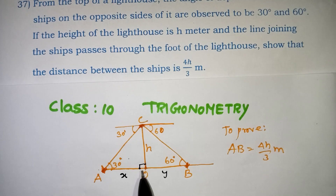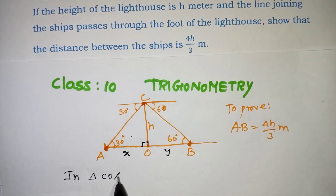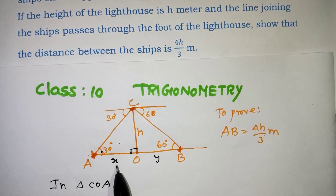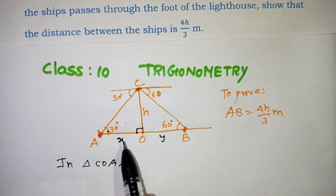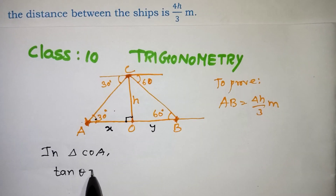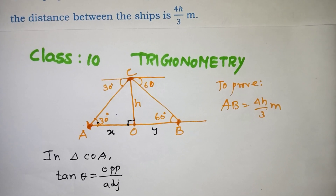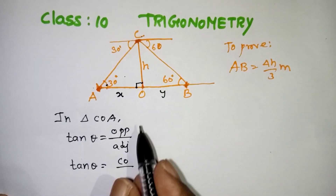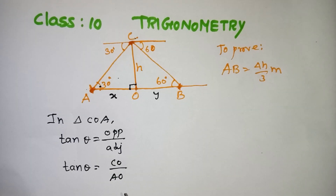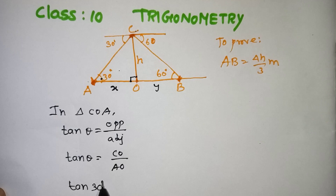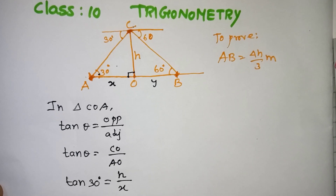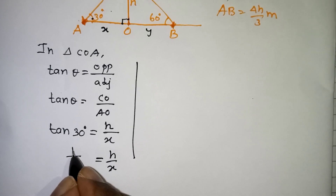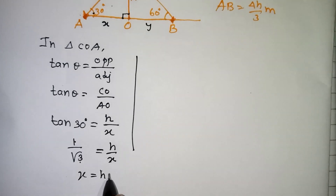In right-angle triangle COA, the opposite side is CO which equals h, and the adjacent side is AO which equals x. Using tan(30°) equals opposite over adjacent: tan(30°) = h/x. The table value of tan(30°) is 1 by root 3, so 1/√3 = h/x. This gives us the first equation: x = h√3.